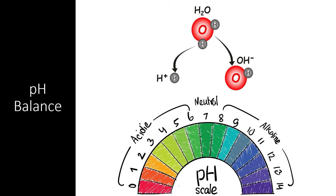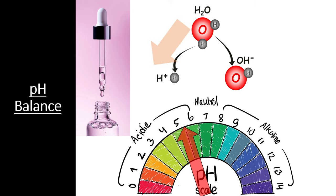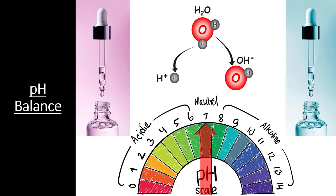pH literally stands for parts hydrogen. It is essentially a measure of how much water molecules within a solution are dissociating into the components of hydrogen and hydroxide. In a neutral solution, water molecules dissociate back and forth between hydrogen ions and hydroxide molecules. If you add an acid to the solution, it causes more hydrogen ions to form within the solution and fewer hydroxide ions, causing the solution to become more acidic. Alternatively, if you add a base to the solution, it causes the formation of more hydroxide groups and increases the pH.